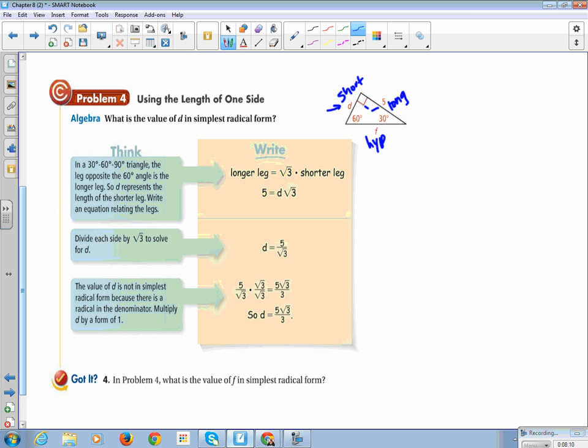Okay, to solve this, we've got my longer leg is equal to the square root of 3 times the shorter leg. We're going to start out with that formula. We go 5 is equal, because that's the longer leg, to D times the square root of 3. So, if I divide both sides by square root of 3, I get that our short side is equal to 5 divided by root 3.